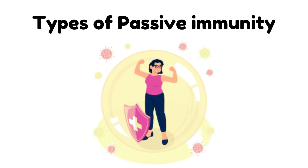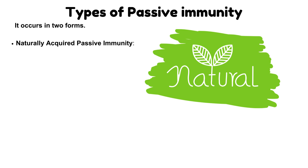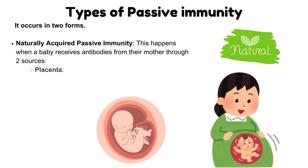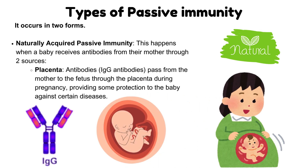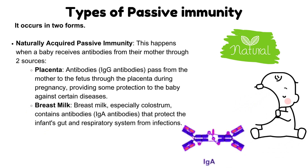Passive immunity occurs in two forms. Naturally Acquired Passive Immunity: this happens when a baby receives antibodies from their mother through two sources — the Placenta, where IgG antibodies pass from the mother to the fetus during pregnancy, providing some protection against certain diseases; and Breast milk, especially colostrum, which contains IgA antibodies that protect the infant's gut and respiratory system from infections.